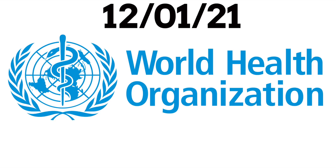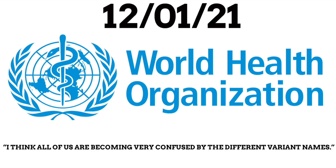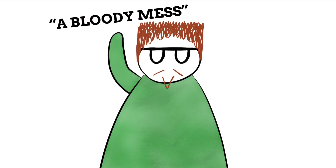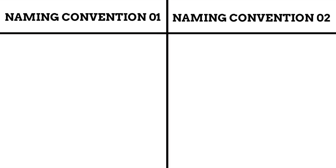On the 12th of January 2021, the World Health Organization held a meeting concerning the coronavirus variants, and one part of this meeting centered around names for them. Maria van Kerkhoff, an infectious disease epidemiologist and COVID-19 technical lead, said at this meeting that she thinks all of us are becoming very confused by the different variant names. Tulio de Oliveira, a South African bioinformatician studying one of these variants, was a tad more to the point, referring to the nomenclature of COVID-19 variants as, quote, a bloody mess. Despite all this confusion, two primary naming conventions have come about and are being used the most.